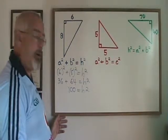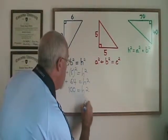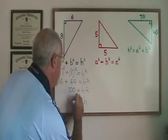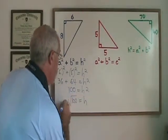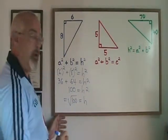If h squared is equal to 100, then h is equal to the square root of 100. And the square root of 100 is 10.